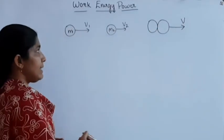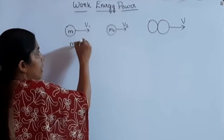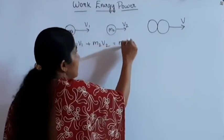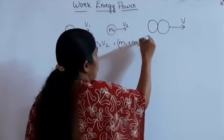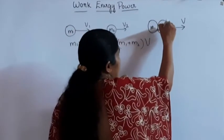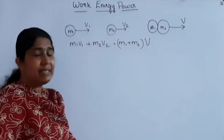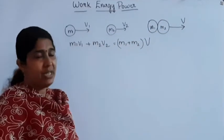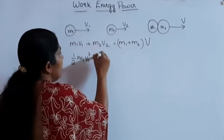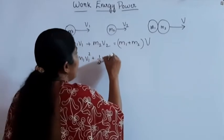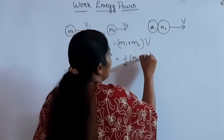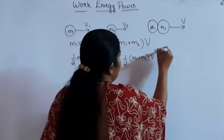In the case of perfectly inelastic collision, these two bodies stick together and move with the common velocity V. According to conservation of momentum: M1V1 + M2V2 = (M1 + M2)V. This is the common velocity. According to conservation of energy: ½M1V1² + ½M2V2² = ½(M1 + M2)V².